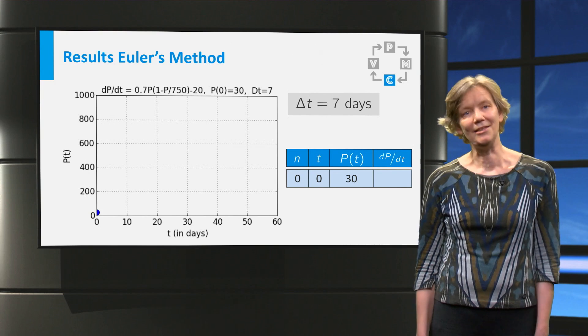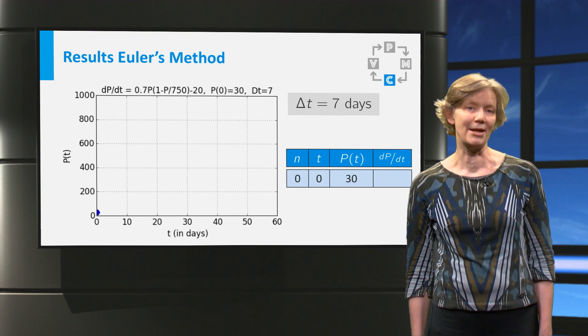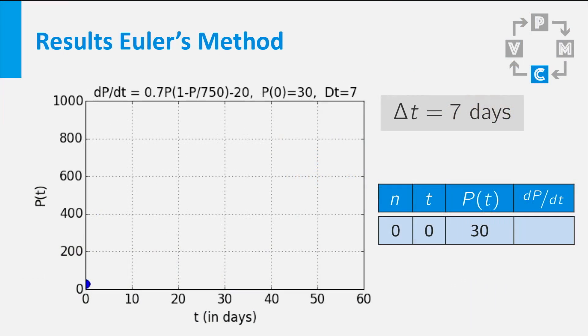We start at time 0 with 30 rainbow fish. With the differential equation we calculate the derivative dP/dt equals 0.7 times P times etc. So when you substitute P equal to 30, dP/dt becomes 0.16.